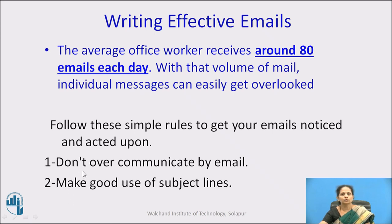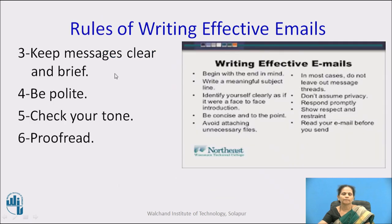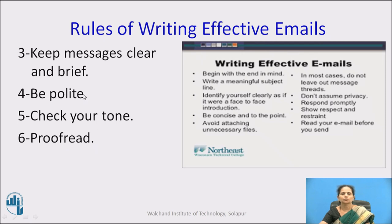Follow these simple rules to get your emails noticed and acted upon. The first rule is don't over communicate by email. The second rule is make good use of subject lines. The third rule is keep messages clear and brief. The fourth is be polite. The fifth is check your tone. And the sixth rule is proof read. All these are the rules which make your email effective.